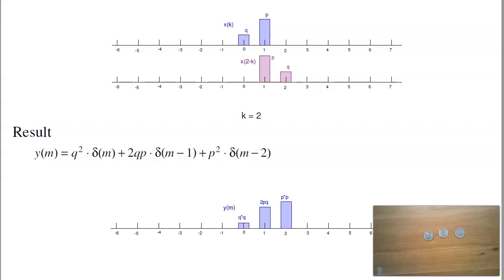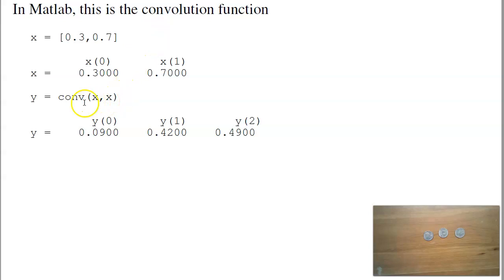MATLAB has its own convolution function. It's called CONV. For example, if I have a 70% chance of getting heads, when I convolve x with x, I'm going to get q squared, 2q times p, and p squared. So there's a 49% chance it'll have two heads, 42% chance it'll have one heads, 9% chance it'll have zero heads. That's CONV.